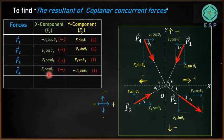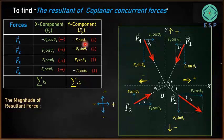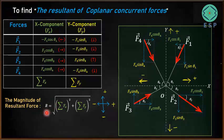We are able to write down all the forces and their X and Y components in the table. Now we add all the X components together — that is the summation of forces in the X direction, ΣFx. Similarly, adding the Y components gives the summation of Y component of forces, ΣFy. The magnitude of the resultant force R is given by: R = √(ΣFx² + ΣFy²).